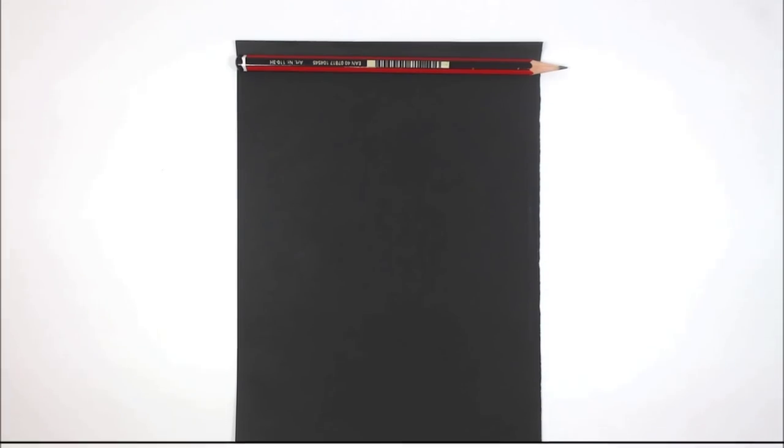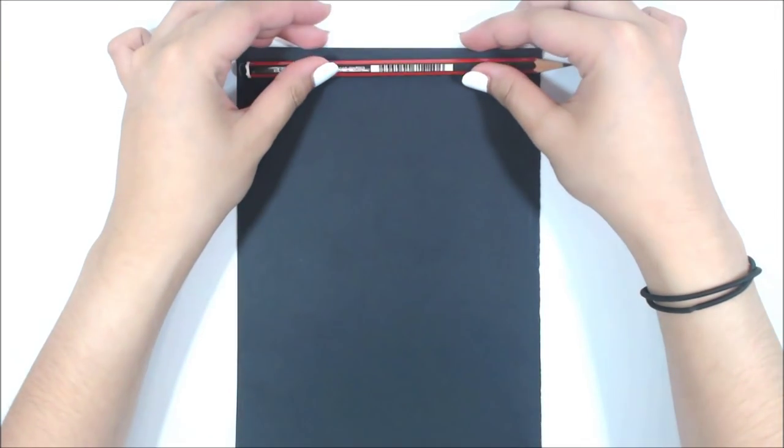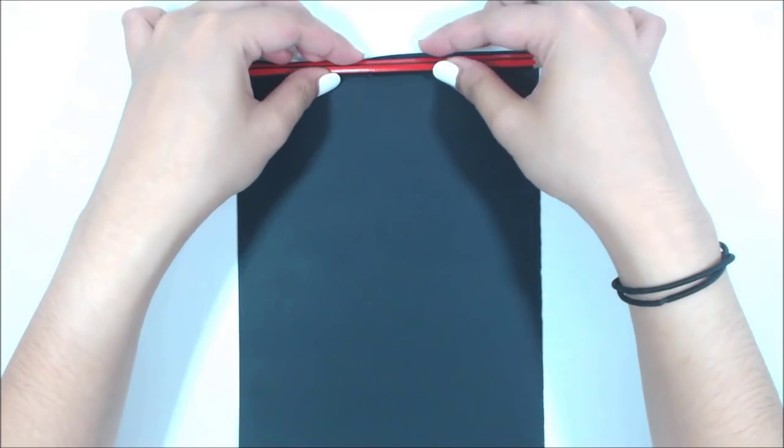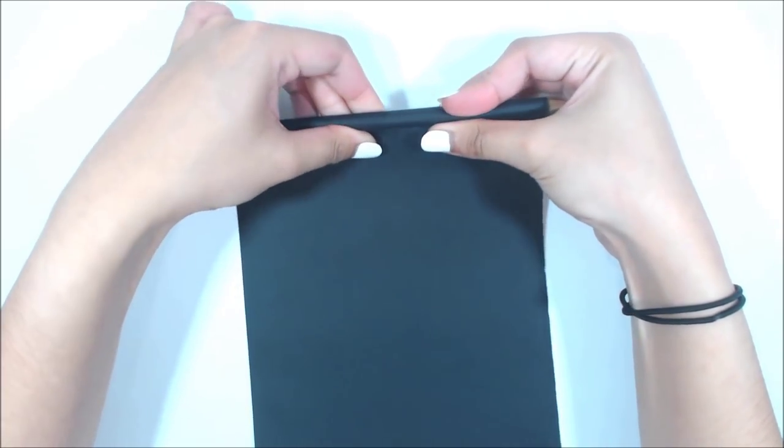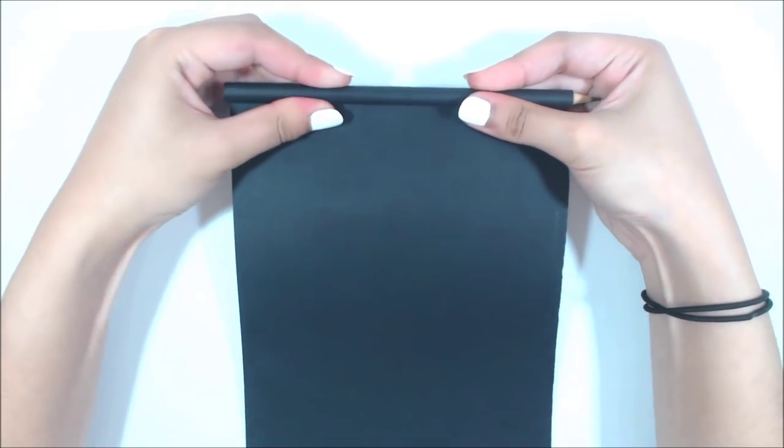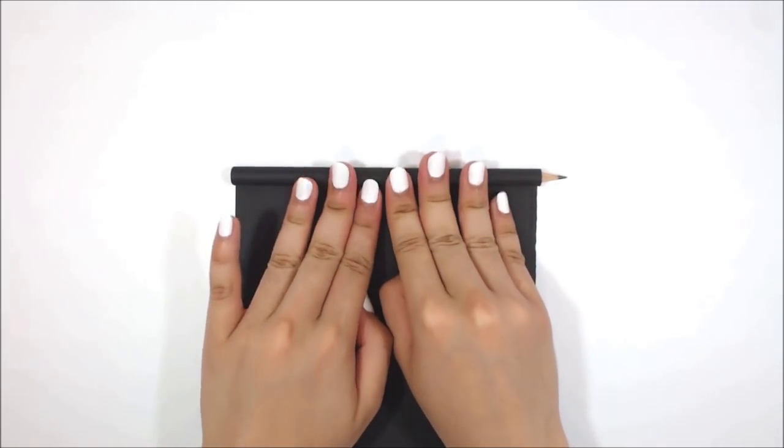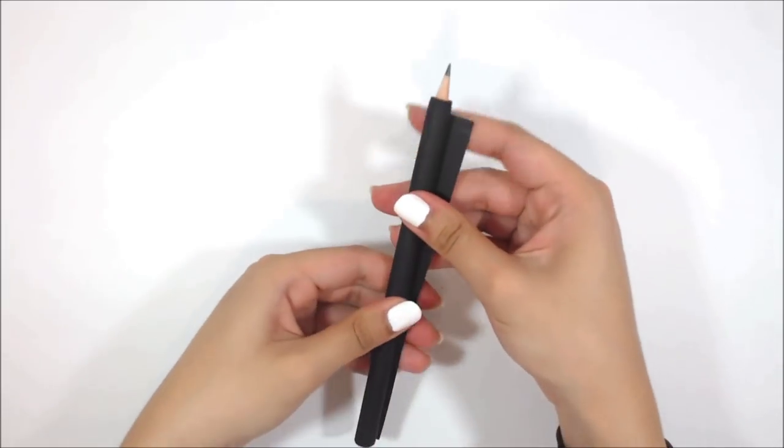So I cut it in half and the first half I am going to use for the main body of the pencil extender. Using the pencil as a guide, I am going to roll the paper as tightly as I could so that the pencil would fit nice and snug when we use it.